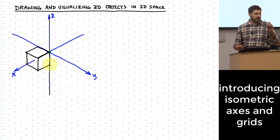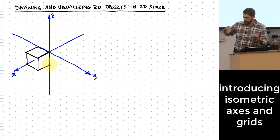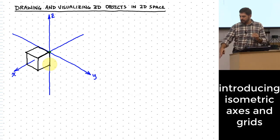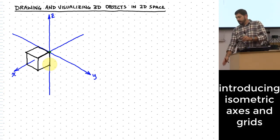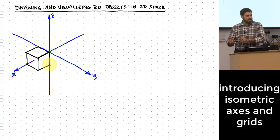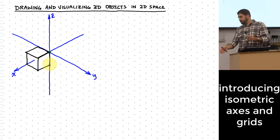Our brain is used to taking something we're looking at — like the corner of a table — and seeing these lines that go maybe 120 degrees apart from each other. They go 120 degrees apart in a 2D projection, but your brain interprets that as being three mutually perpendicular lines.